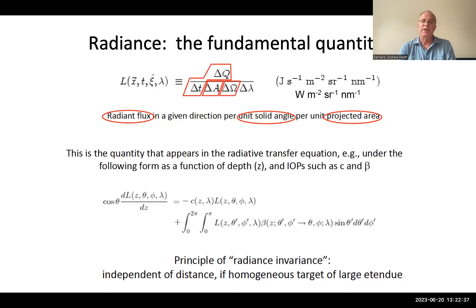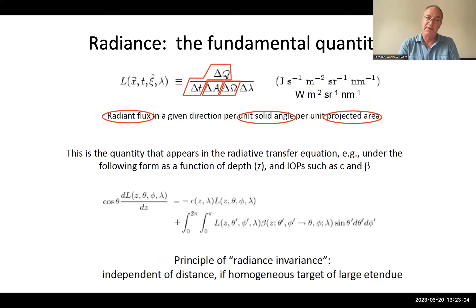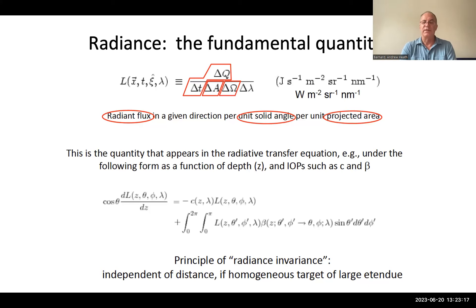If there were no absorption or scattering, the beam attenuation c and backscattering β would both equal zero, so the change in radiance with distance or depth would be zero. This implies the principle of radiance invariance — a key principle — though that would only hold in a plane-parallel condition.